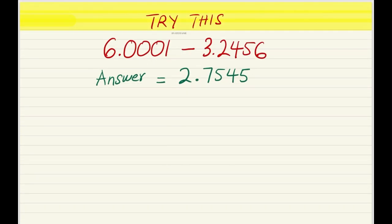For this example, I'd like you to try on your own. The question is 6.0001 minus 3.2456. The answer should be 2.7545. I hope this was helpful. Don't forget to check my other videos on conversions, ratio and proportions, and fractions and decimals.